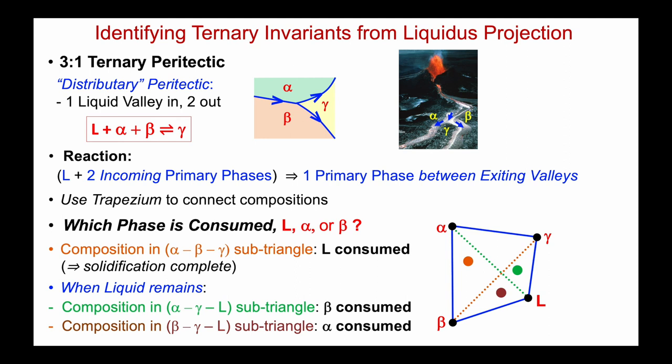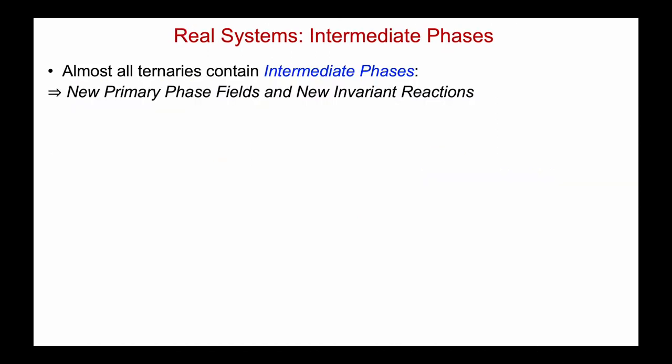So three possibilities: solidification complete if the composition is in the alpha–beta–gamma sub-triangle; beta is consumed if it's in the alpha–gamma–liquid sub-triangle; and alpha is consumed if it lies in the beta–gamma–liquid sub-triangle. Most real systems contain intermediate phases, and in our next video we'll look at how those start to make the phase diagram look a little more intimidating.